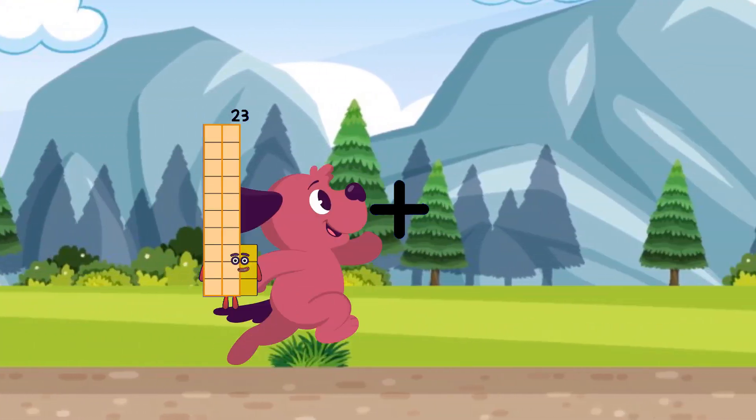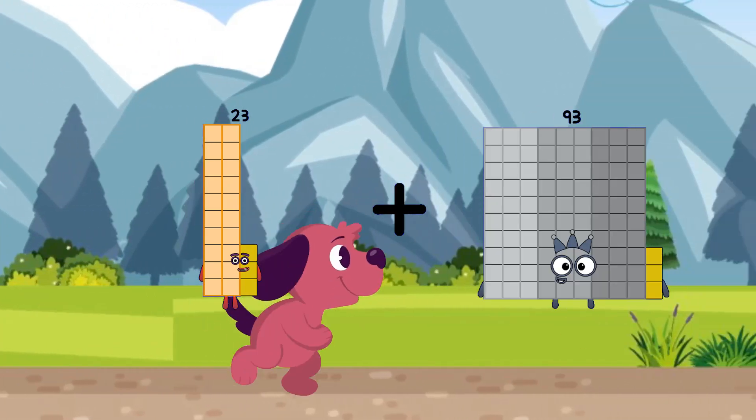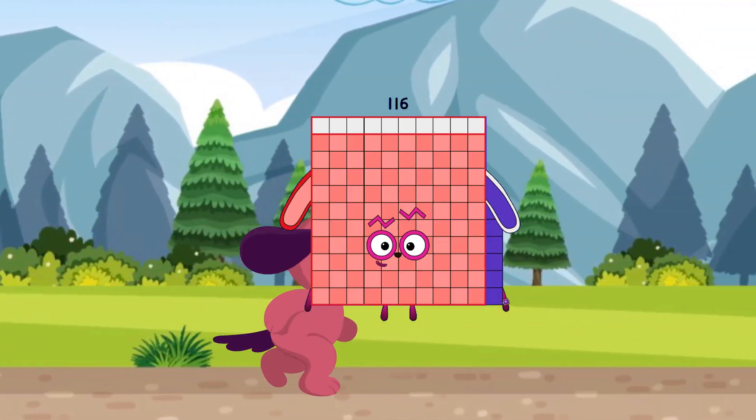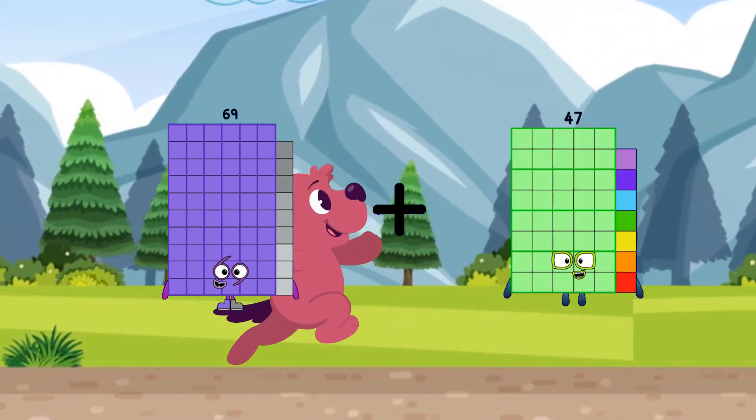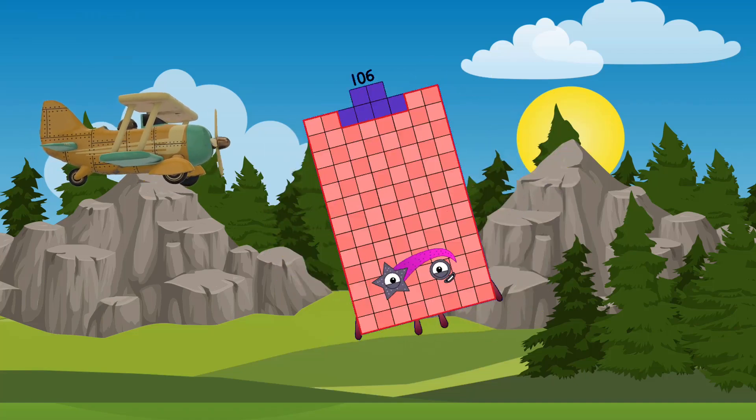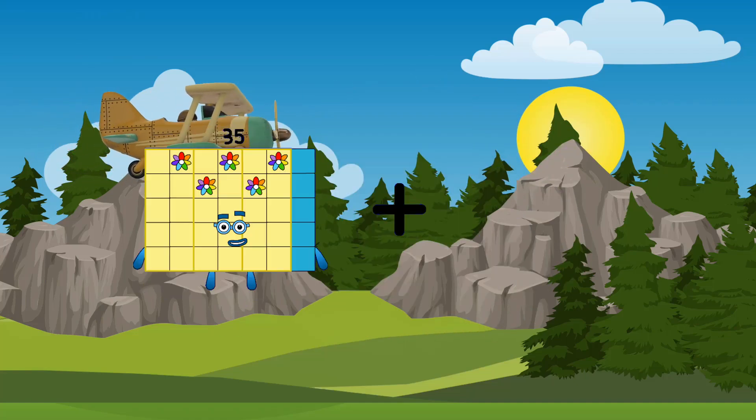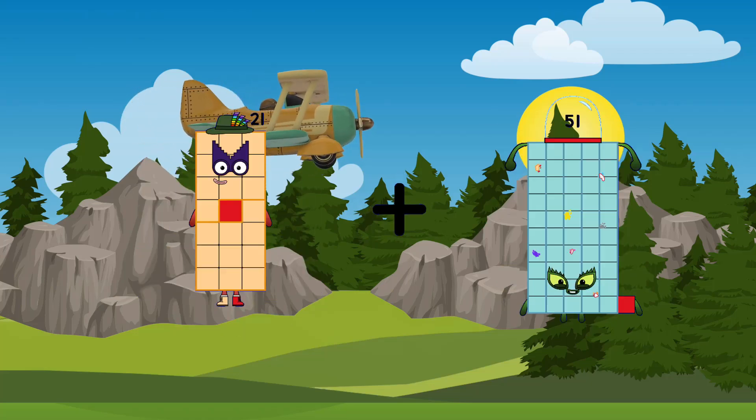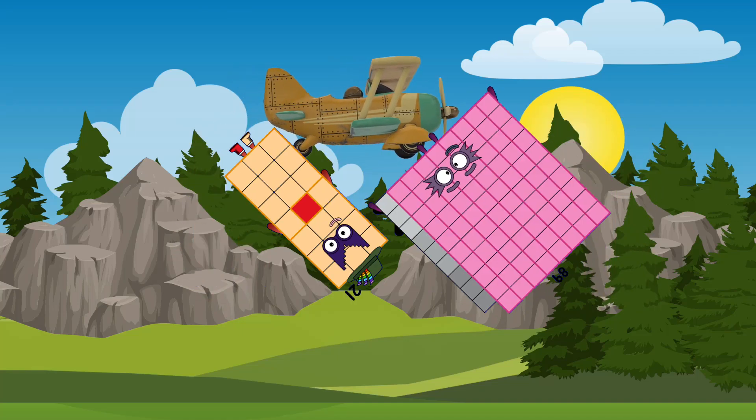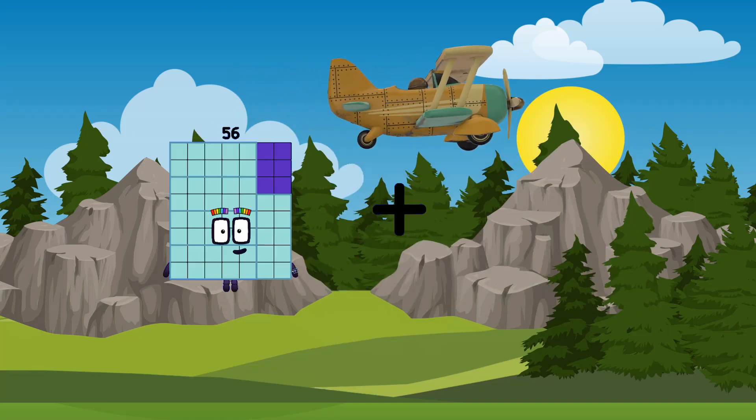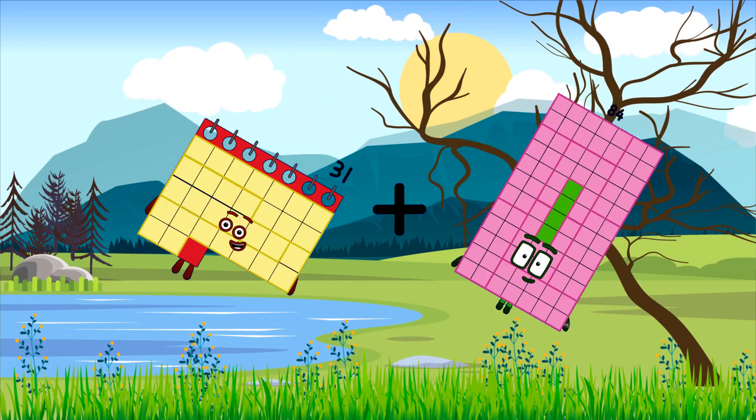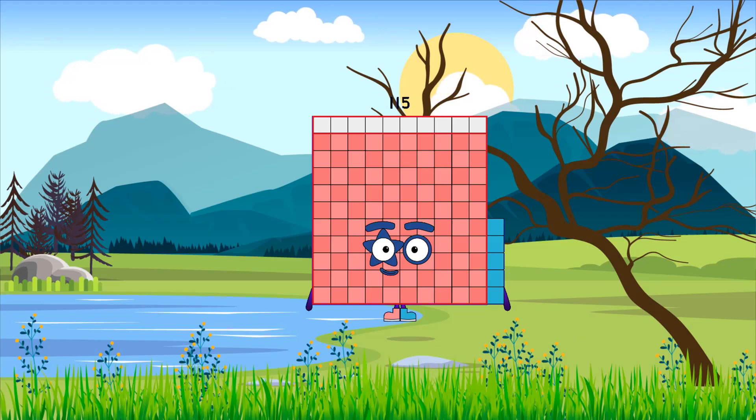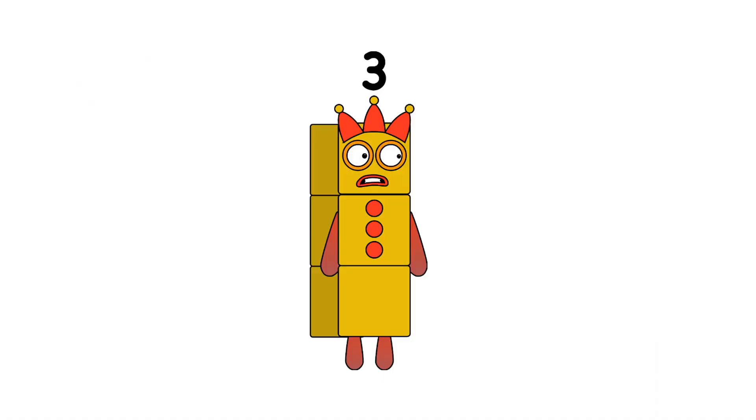23 plus 93 equals 116, 69 plus 37 equals 106, 21 plus 89 equals 110, 31 plus 84 equals 115. What a normal day at Numblox, just wipe the Numblox and jinx.